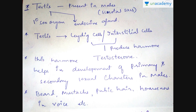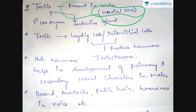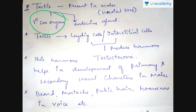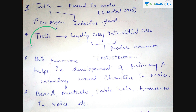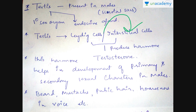Coming to the next gland — the testis. The testis is present in males in the scrotal sacs. It is a primary sex organ and an endocrine gland. The testis has a type of cells called Leydig cells, or interstitial cells, and these cells produce hormones called testosterone.